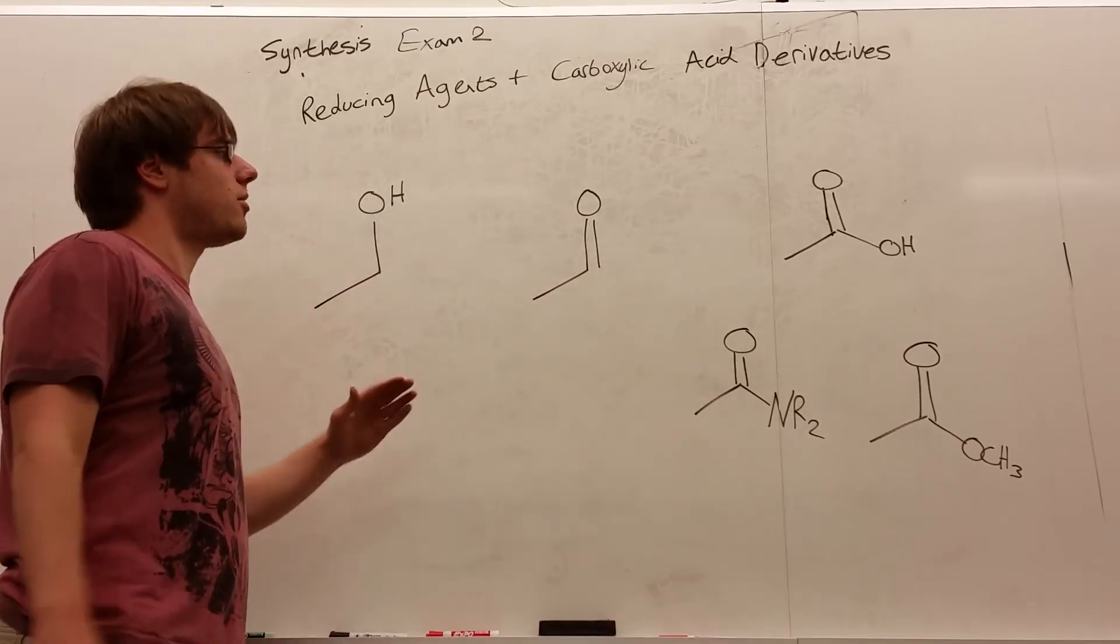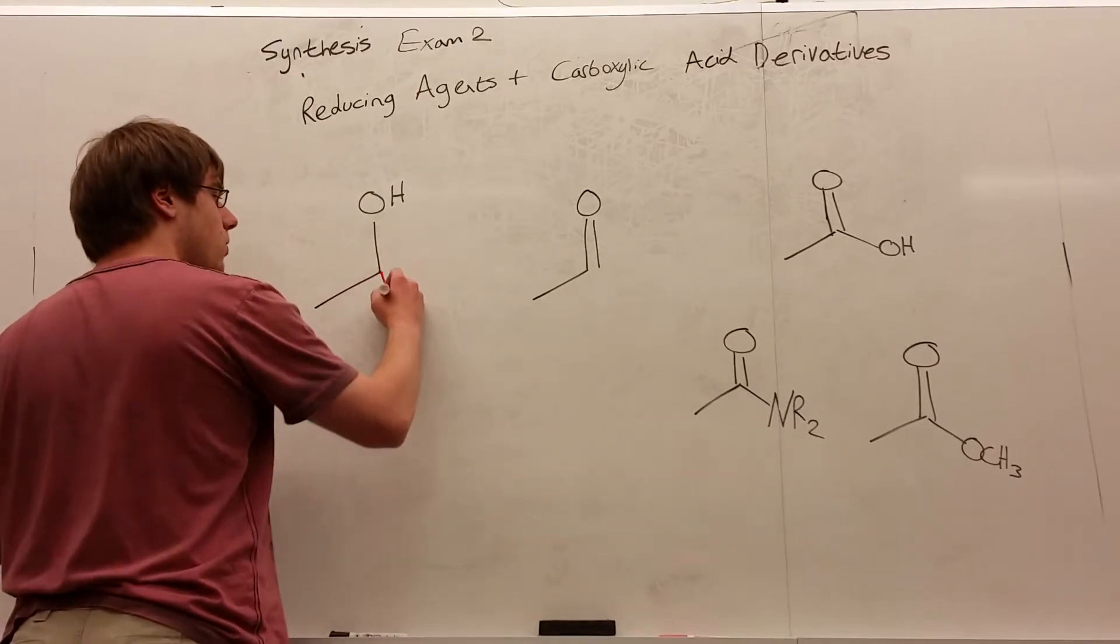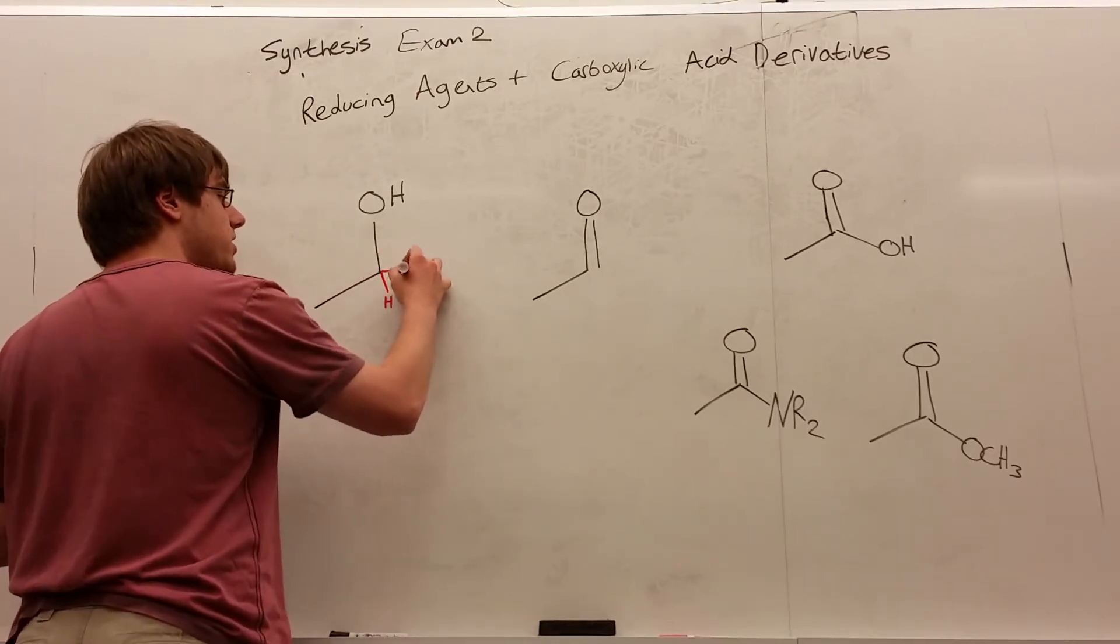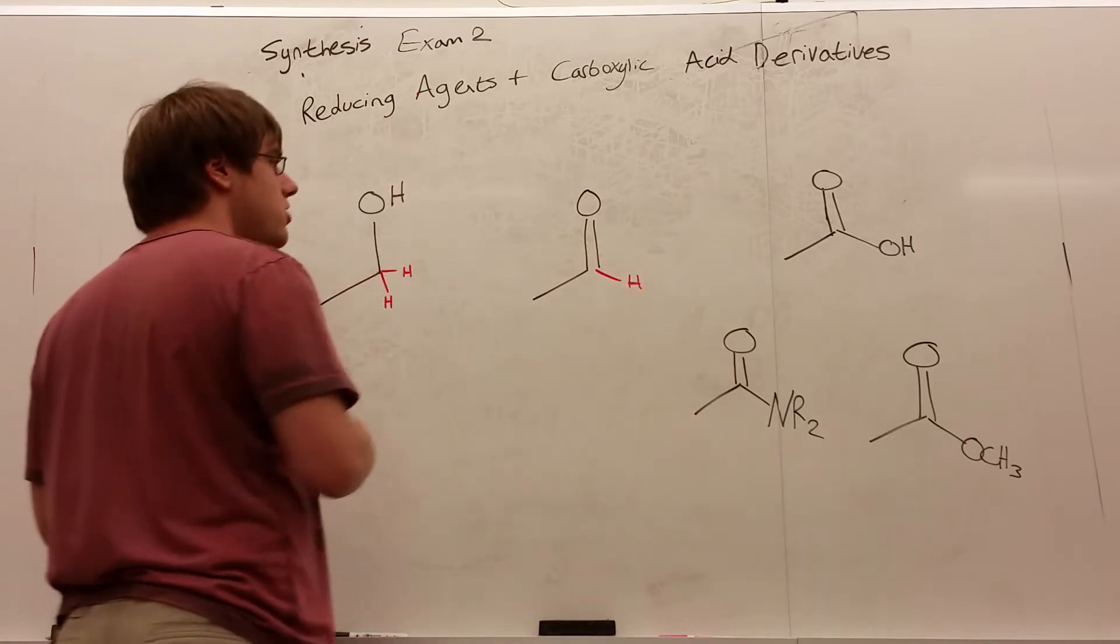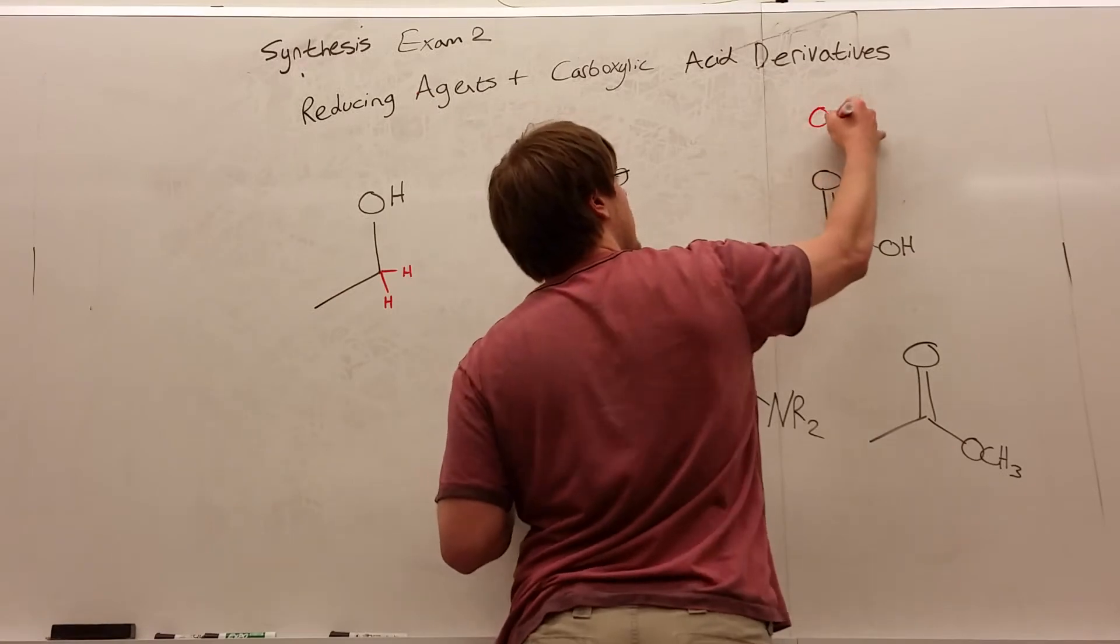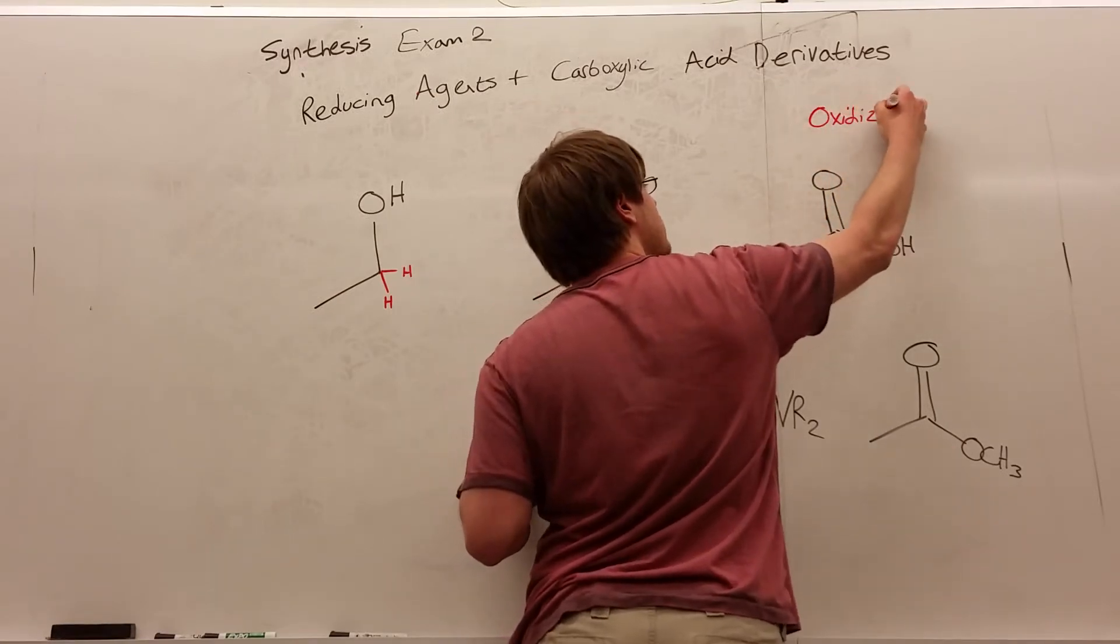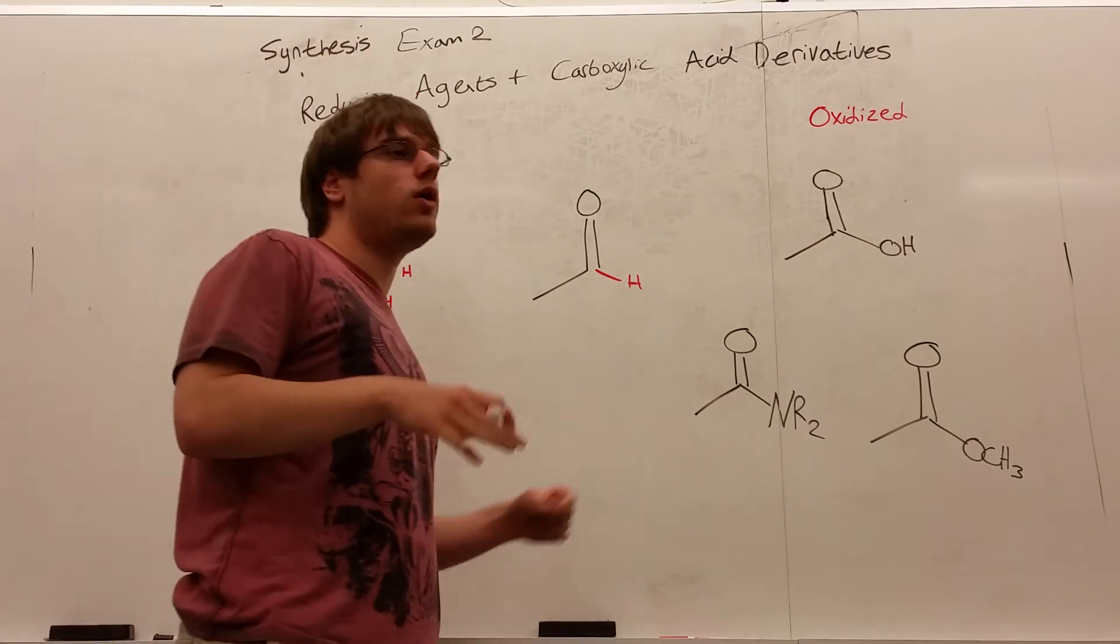But before we get to that, let's talk about how do we even get the carboxylic acid from something like an OH. So the first thing to point out is what are we doing? What is the technical term of going from one thing to the next? Well, as we move towards the carboxylic acid, we are becoming more oxidized.